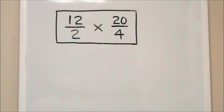In this multiplication problem involving fractions, 12 over 2 times 20 over 4, we can see that both improper fractions can be simplified to whole numbers. This saves us a lot of time in wasted multiplication.